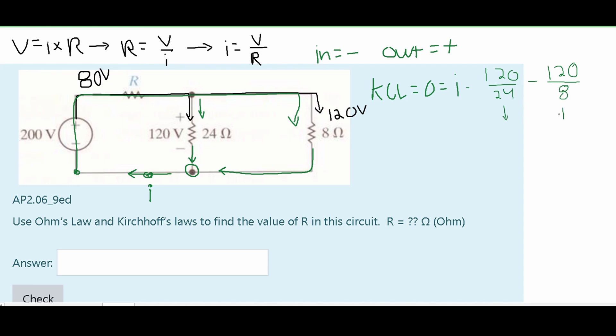If we divide out these, we're going to get 120 divided by 24 equals 5, and 120 divided by 8 equals 15. So we're going to have I minus 5 minus 15, or I minus 20. If we move this over to the other side, we're going to get that 20 equals I, and I is measured in amps, so we have 20 amps. And this is the current running through our entire system.